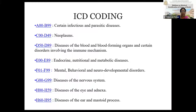These are the series of ICD codes in alphanumeric format. The series A00 to B99 includes certain infectious and parasitic diseases. C00 to D49 contains neoplasms. D50 to D89 includes diseases of blood and blood-forming organs and certain disorders involving the immune mechanism. E00 to E89 includes endocrine, nutritional and metabolic diseases.